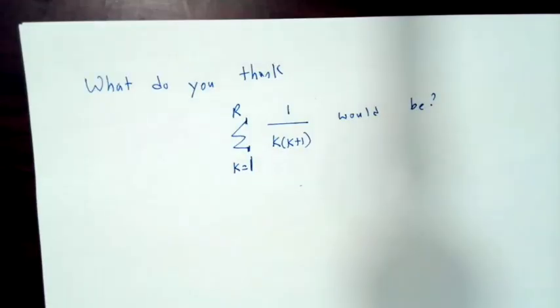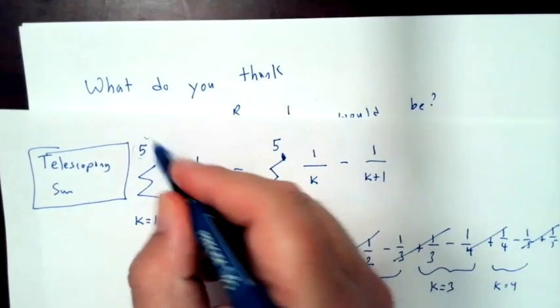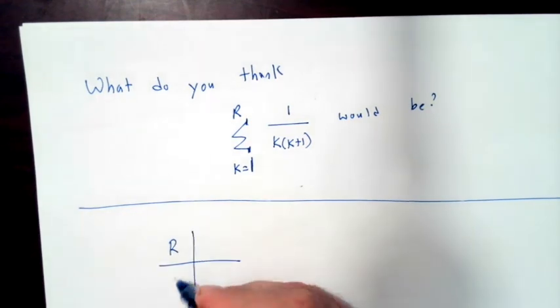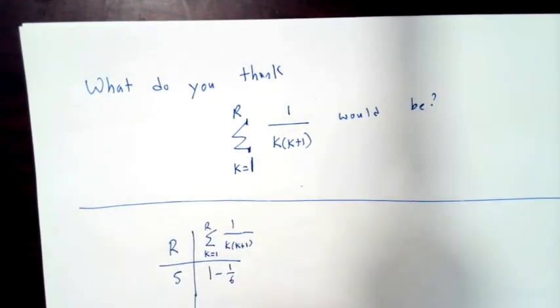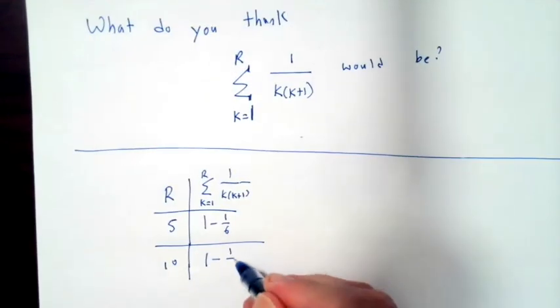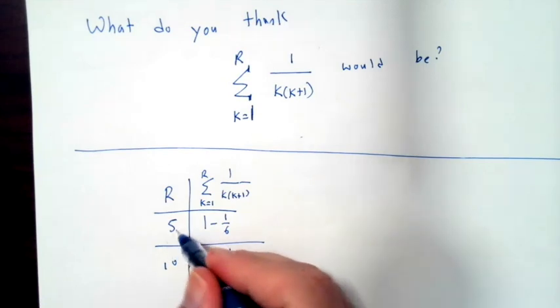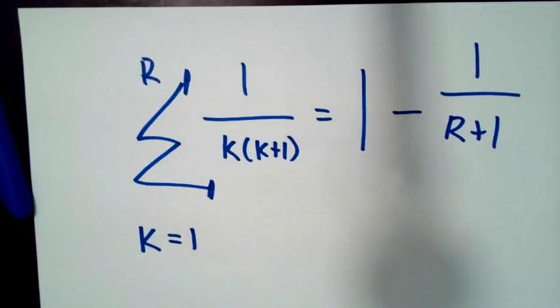We've seen enough to notice a pattern. What happens if we consider the sum from k equals 1 to r of 1 over k times k plus 1? We have two data points. When r equals 5, the sum was equal to 1 minus 1 over 6. When r equals 10, this sum was equal to 1 minus 1 over 11. In general, this sum will be equal to 1 minus 1 over r plus 1.